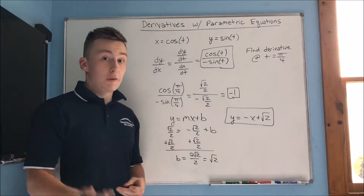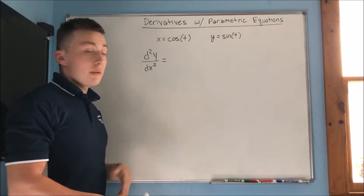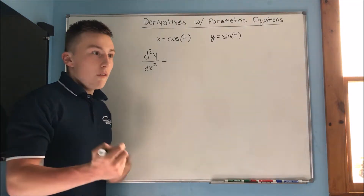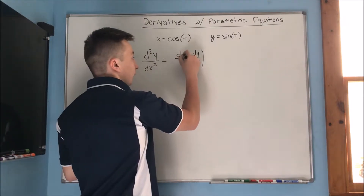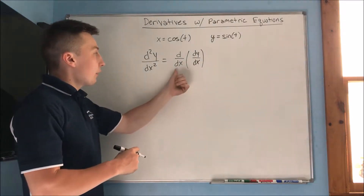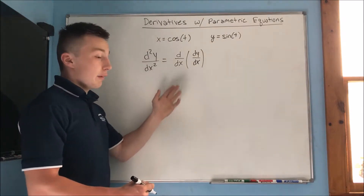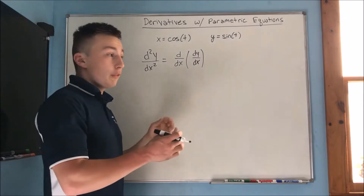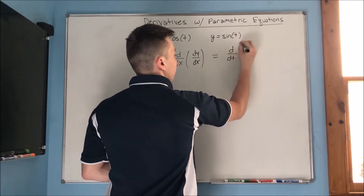That covers first derivatives. Now before discussing the second derivative for parametric equations, recall that for a regular equation we start with the first derivative dy/dx and take a derivative with respect to x to get the second derivative. The problem is that dy/dx for parametric equations is in terms of t, so we can't directly take a derivative with respect to x.